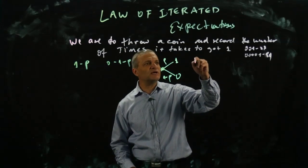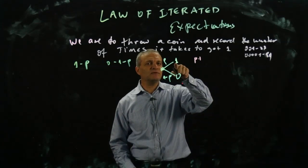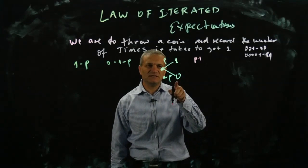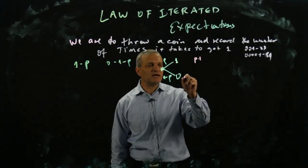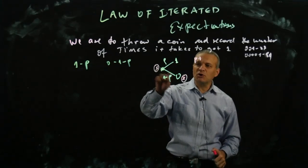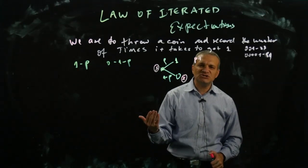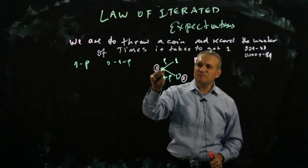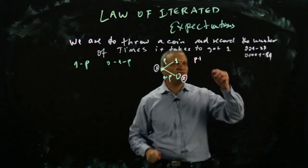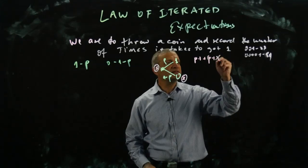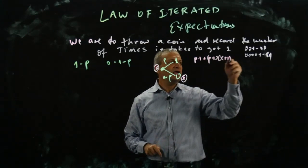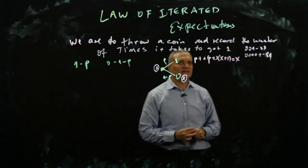If I get one, my outcome is one dollar, so p times one is my expected value in that branch. If I get zero, I don't know how much I'm getting — but I claim the price in that branch, let's call it x, is the same as the starting price. When you throw zero, nothing has changed — you start again. So that branch contributes one minus p times x plus one, because you've thrown one more time. This gives us the equation to solve.